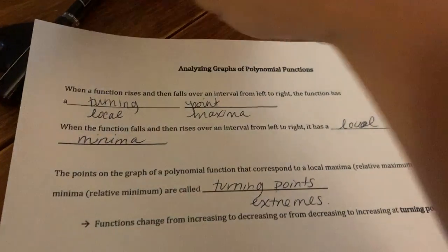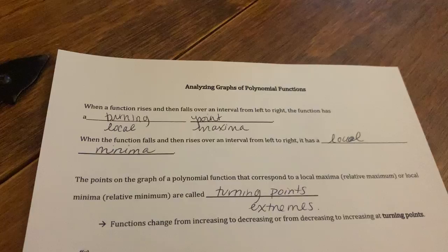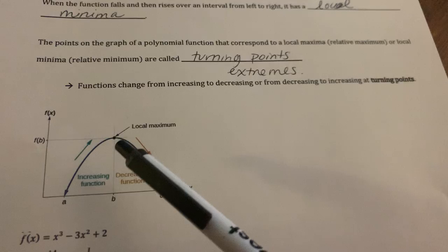Okay, part two, analyzing graphs of polynomial functions. It says when a function rises and falls over an interval, this is called a turning point. But more specifically, I want you to realize when it's rising and then falling, that's a maximum.